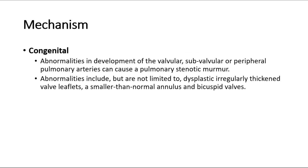In congenital heart diseases, abnormalities in development of the valvular, subvalvular, or peripheral pulmonary arteries can cause a pulmonary stenotic murmur. Abnormalities include, but are not limited to, dysplastic irregularly thickened valve leaflets, a smaller-than-normal annulus, and bicuspid valves.